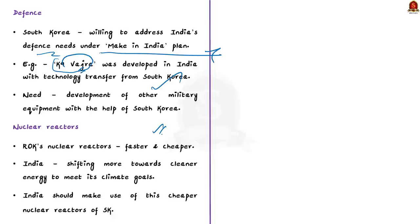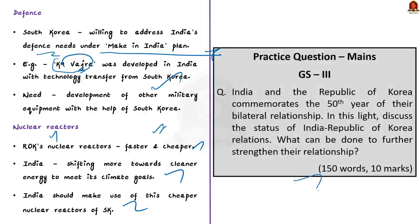The third area is nuclear reactors. The nuclear reactors produced in South Korea are efficient and cheap. As we all know, India is shifting towards cleaner energy to meet its climate goals. So India should make use of these cheaper and efficient nuclear reactors from South Korea to meet its clean energy demands. This will benefit both countries and enhance their relationship. In this discussion, we first saw the significance of the Camp David summit, then how its outcome will help both India and South Korea, and finally we saw three areas that India and South Korea need to focus on to strengthen their relationship.